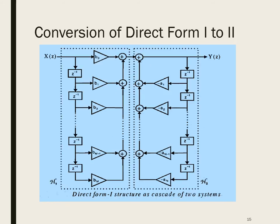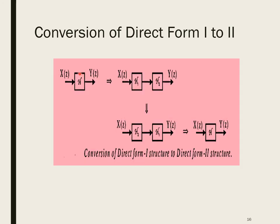Conversion from direct form 1 to direct form 2: In direct form 1, X(Z) passes through transfer function H giving Y(Z). We can split H into H1 and H2, or equivalently H2 followed by H1, and introduce the intermediate function W(Z). This is how the conversion is performed.